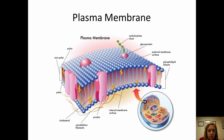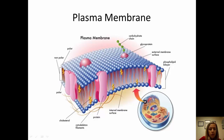The plasma membrane is a phospholipid bilayer — it's made of two layers. The little blue balls are hydrophilic heads, meaning water-loving. The tails on the inside are hydrophobic, meaning they are more water resistant.